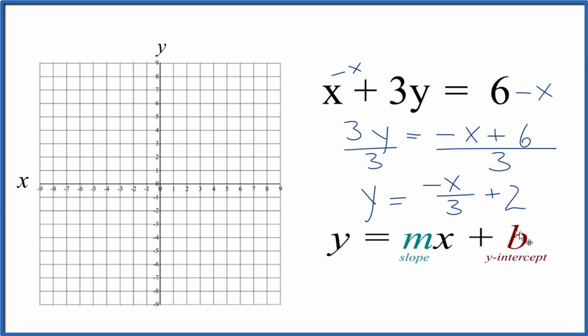Our y-intercept is 2. So we'll go to the y-axis, find 2, and that's our y-intercept. That's where we'll cross the y-axis. For the negative x over 3, let's just call this negative 1 over 3.